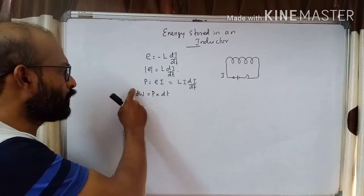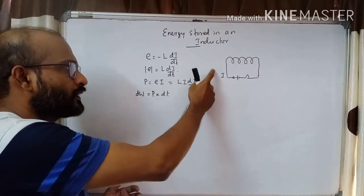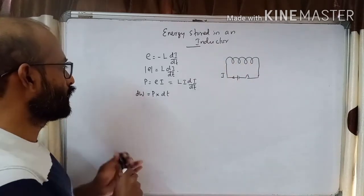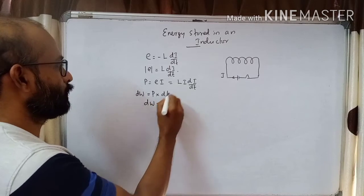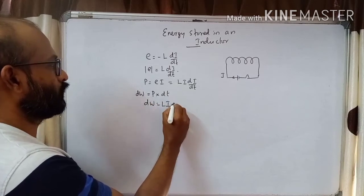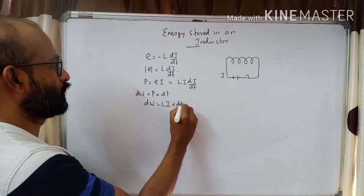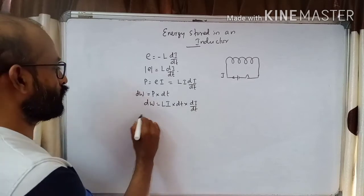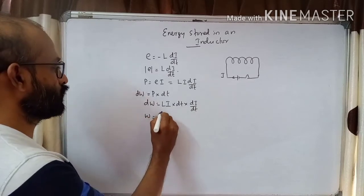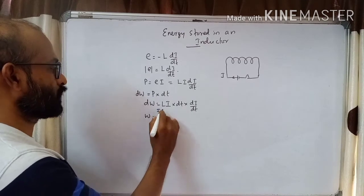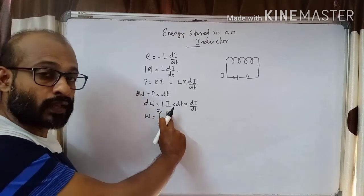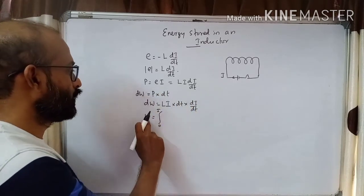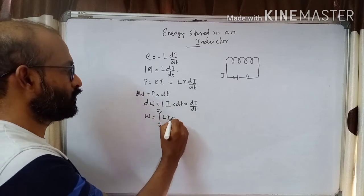The small work done DW equals P times dt. Substituting P, we get DW equal to L times I times dI/dt times dt, which simplifies to L times I times dI. To find the total work done, we integrate this expression as current grows from 0 to I: W equals the integral from 0 to I of L times I times dI.